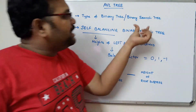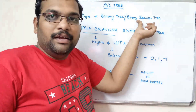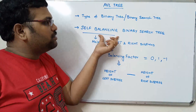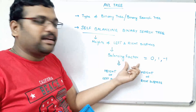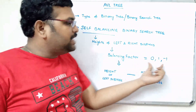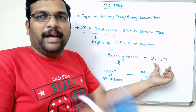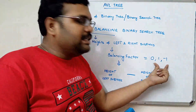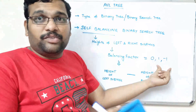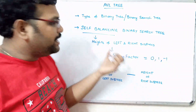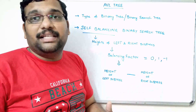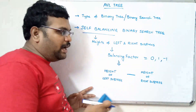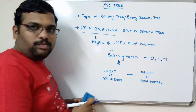Don't get confused — it should satisfy the binary search tree property, it should satisfy the binary tree property, and also it should satisfy self-balancing, that means the balancing factor. Every node should have a balancing factor of either 0, 1, or minus 1. If any node has a value other than these three — not 0, 1, or minus 1 — that implies it is not an AVL tree. Now let us see an example and see how we will get 0, 1, or minus 1.